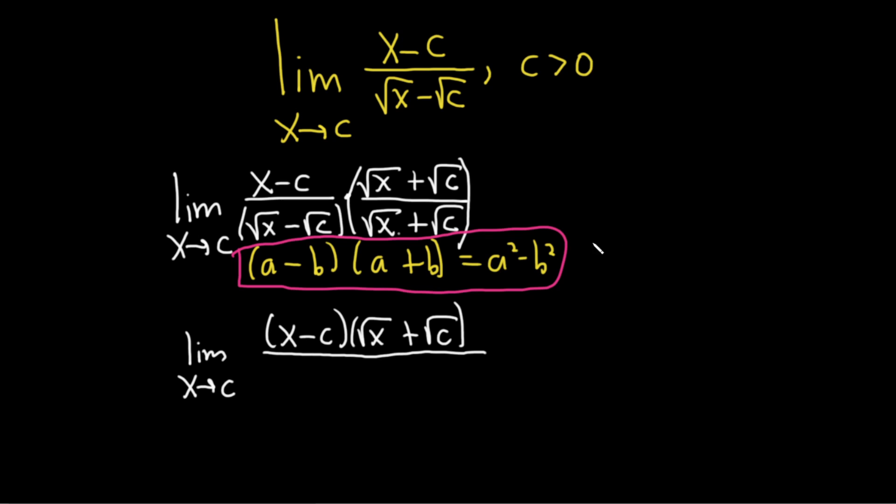So it's just going to be, well, that squared is x and that squared is c, right? Because it's, I'll show it here in a different color so it's not confusing, it's the square root of x squared minus the square root of c squared. And when you square the square root of x, you just get x. When you square the square root of c, you just get c. So we get that.